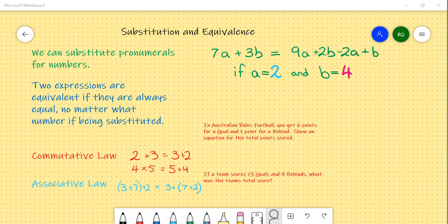That will be important for later on. In the example in green, we have 7a plus 3b is equal to 9a plus 2b minus 2a plus b. We know that these two are the same. We can check that by substituting in unknown numbers. So if a was 2 and b was 4, we would get something like this.